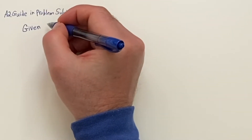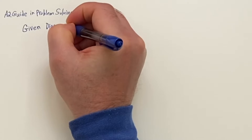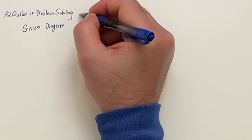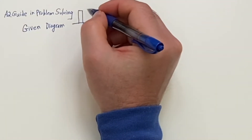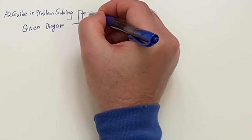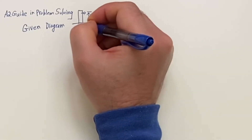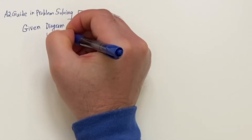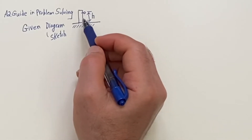So you have a given, and if there's a diagram, go ahead and include it. If there's no diagram, you might want to include one anyway — like if it says dropping a ball, here I have a picture of a building with a little ball, dropping it, giving the height a letter H. To emphasize that this doesn't move, we might annotate it. The diagram doesn't have to be polished — just a sketch.